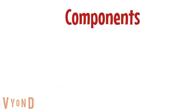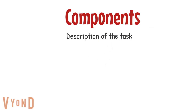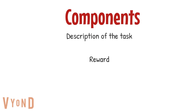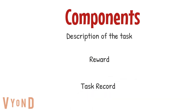Components of a contingency contract include the following: the description of the task or the behavior, the reward or the specified reinforcer, and lastly, the task record.